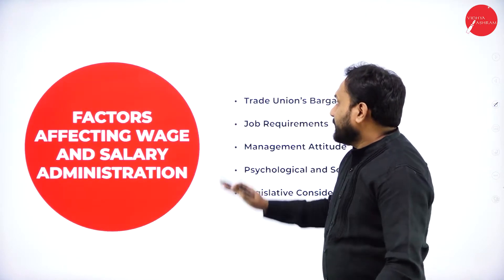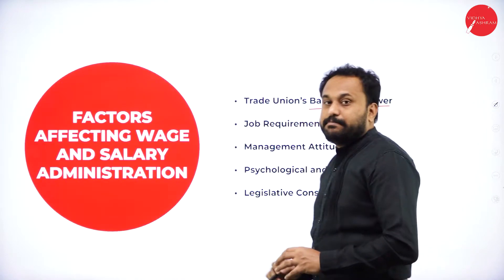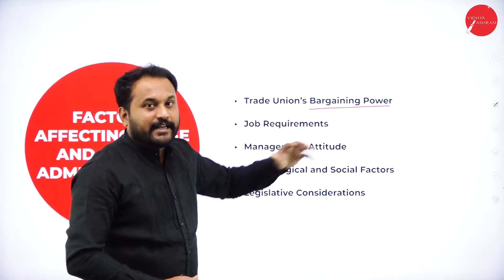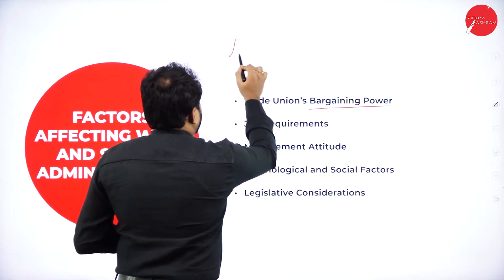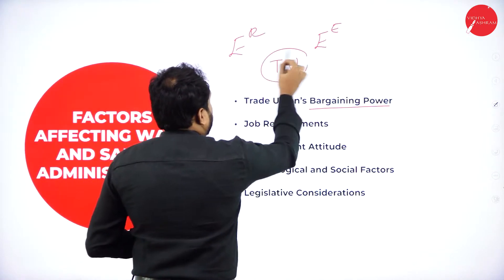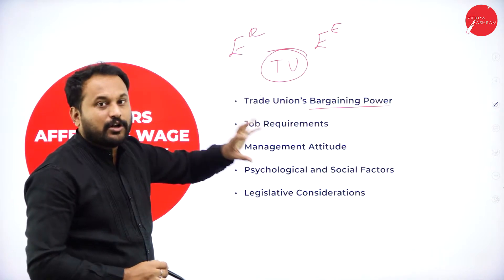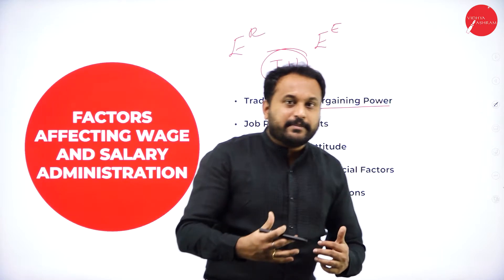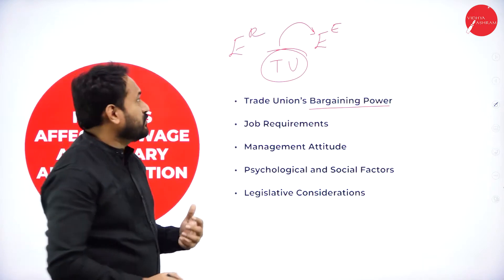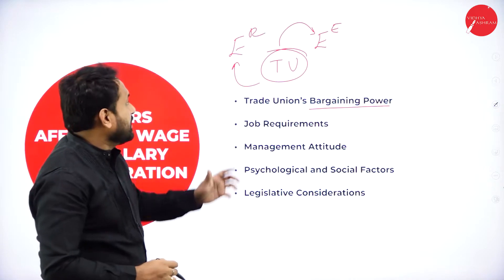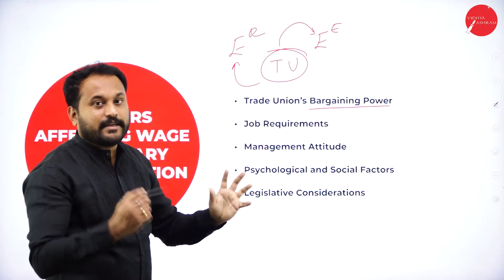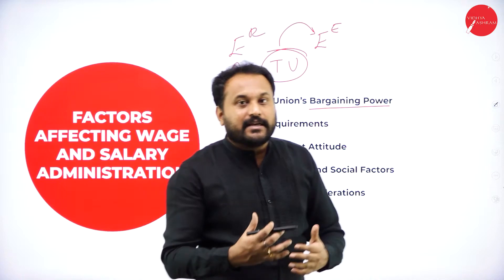The next factor is trade union bargaining power. We have the employer and the employee, and in the middle is the trade union, which acts as a bridge or middleman — typically supporting employees, though some trade unions indirectly support the employer. Through collective bargaining, both parties come to one agreement and the salary or wages are fixed.